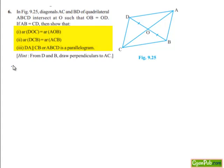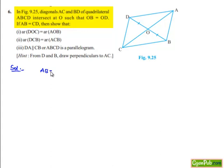Now moving on to the solution. Here we are given a quadrilateral ABCD in which AB is equal to CD, and also OB is equal to OD.